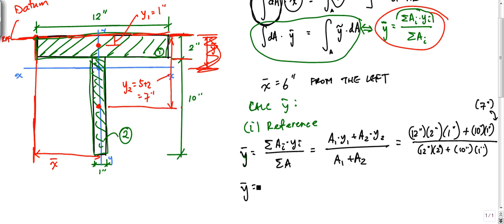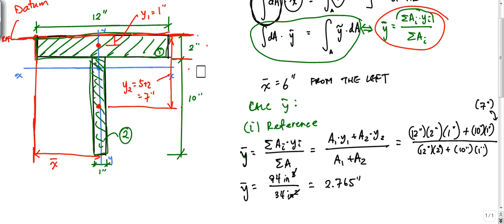Running through the calculations: the numerator is 94 inches cubed and the total area is 12 times 2 plus 10 times 1, which equals 34 inches squared. So y-bar equals 94 divided by 34, which is approximately 2.765 inches. This tells me my geometric centroid is located 2.765 inches from the top reference line.